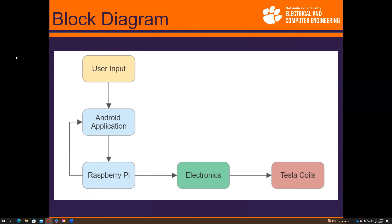This is a schematic of the final circuit that was used. On the right, we have the power inverter and the secondary coil. On the top, we have the logic power supply, and on the bottom left, we have the inverter and the driver power circuit. We will go more into depth into these in a moment.